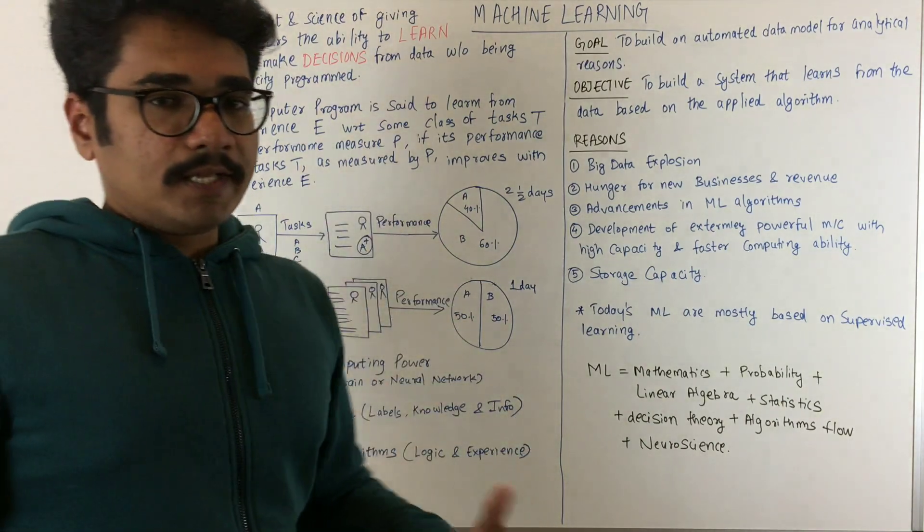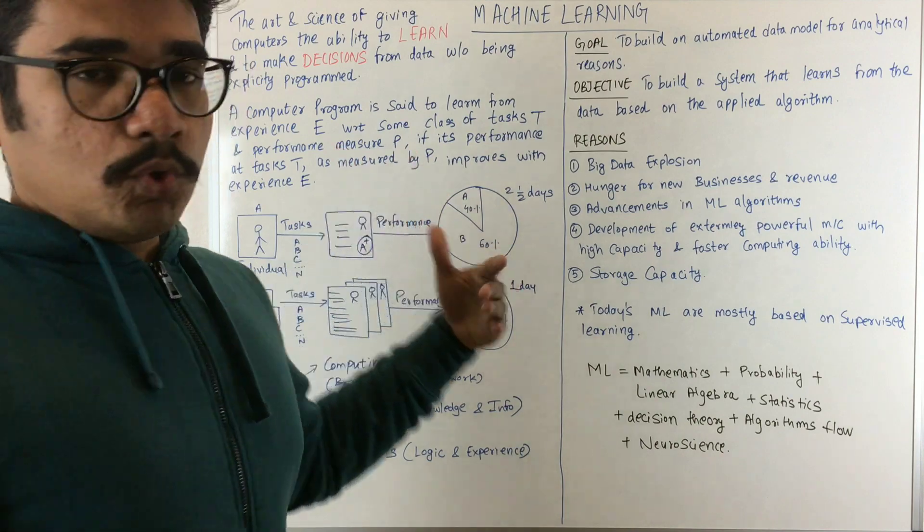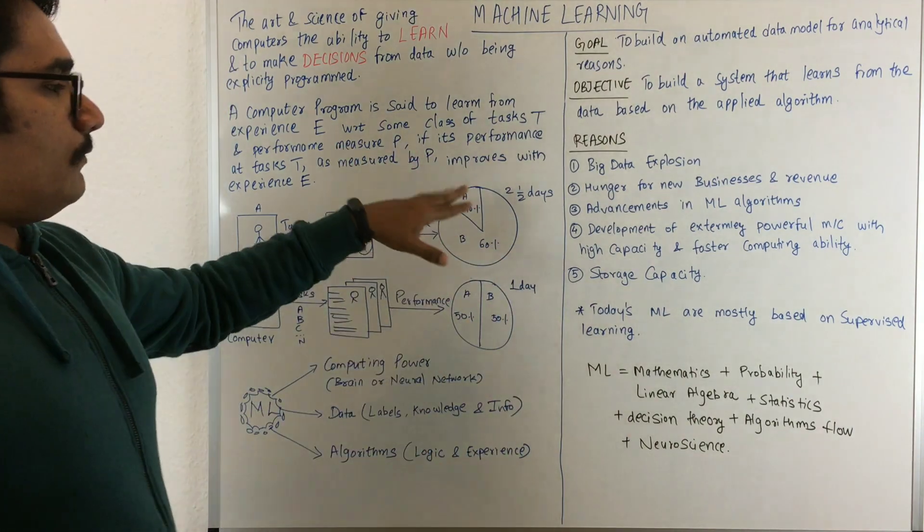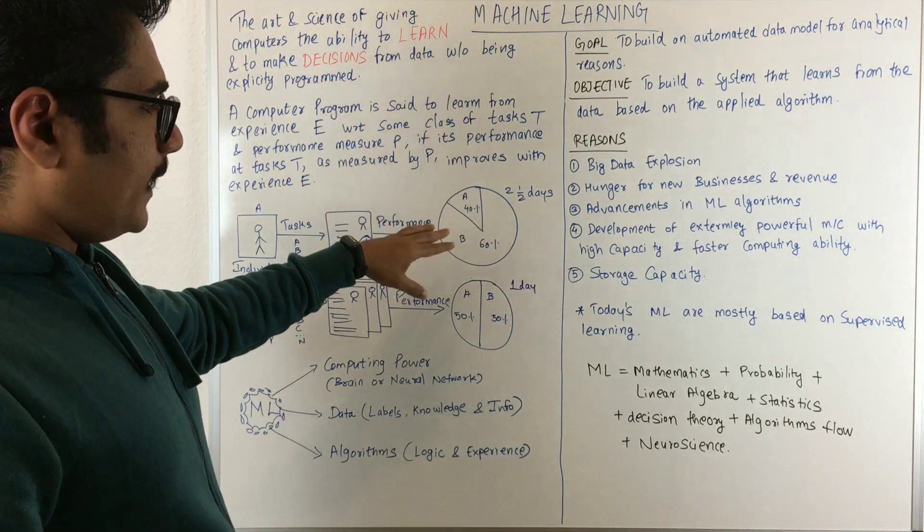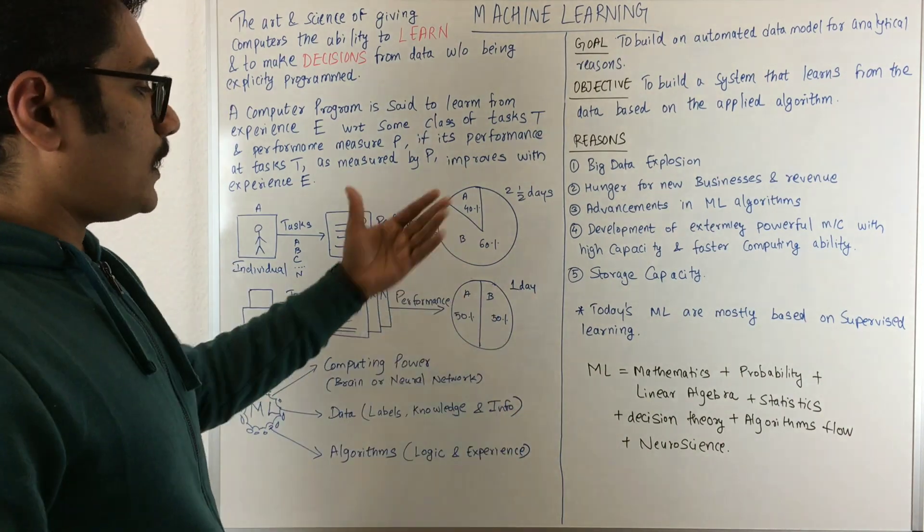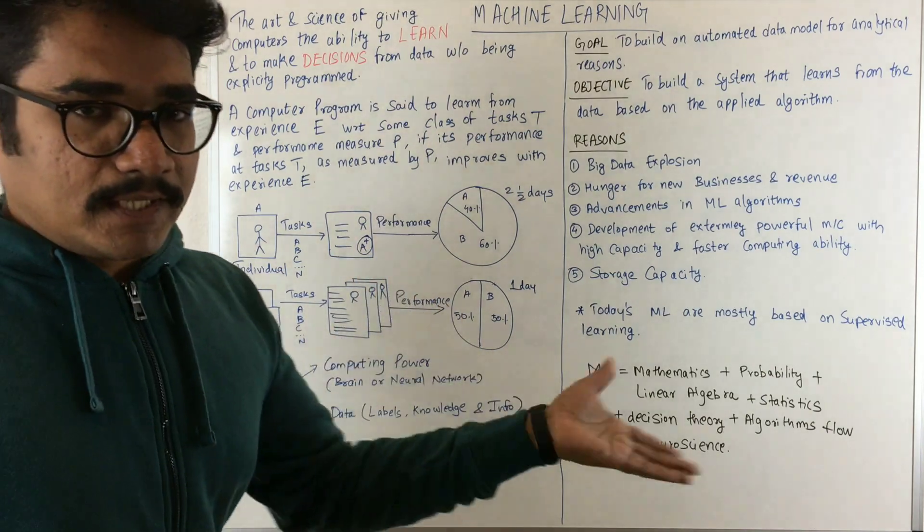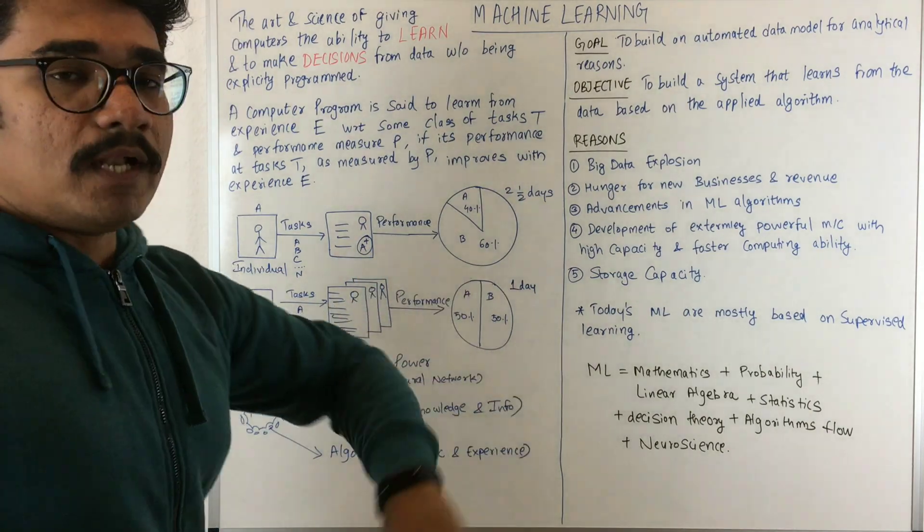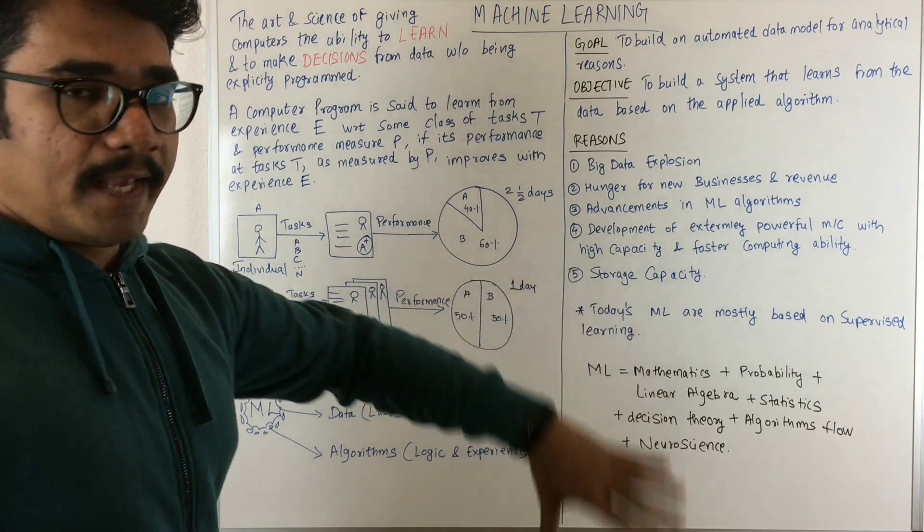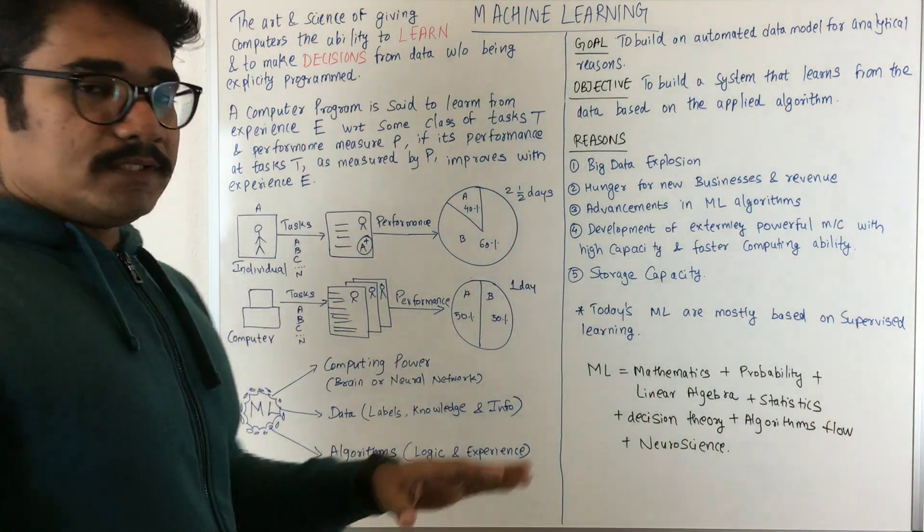The individual had bias: task A had 40% accuracy, task B had 60%, whereas the computer had equal probability and accuracy for tasks A and B. To do this, you need three basic components.